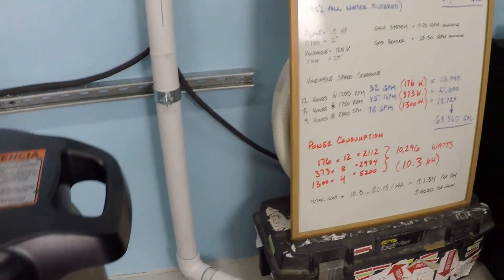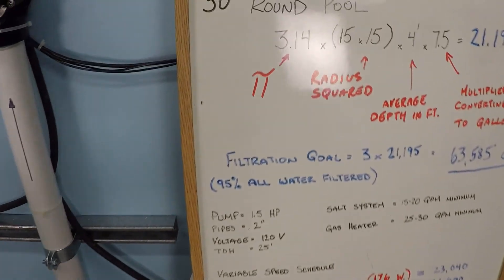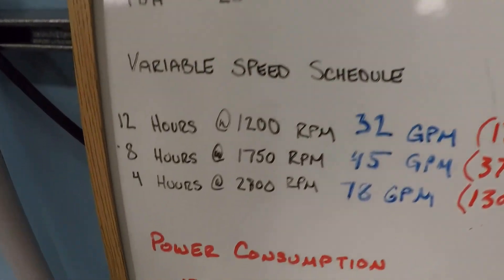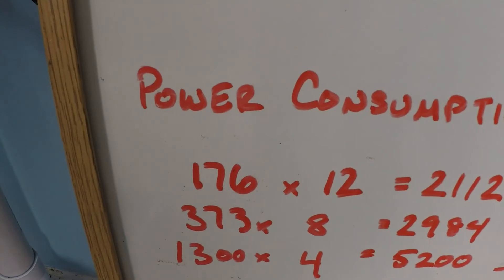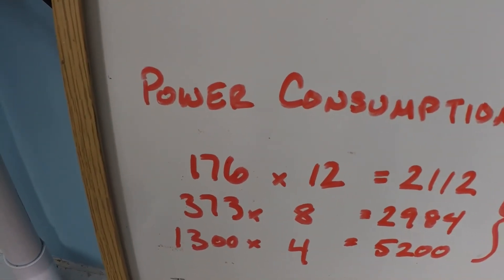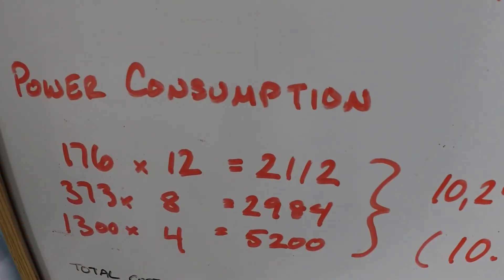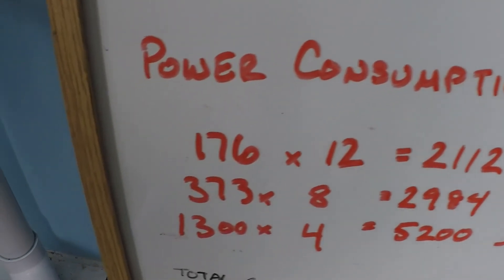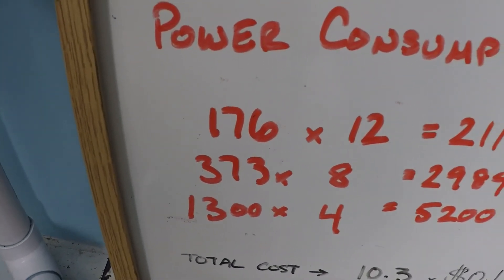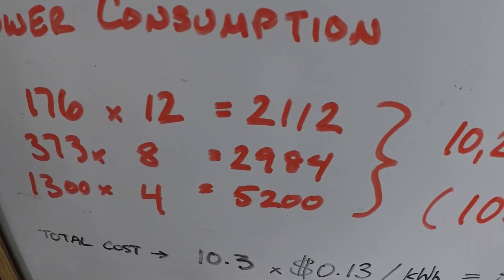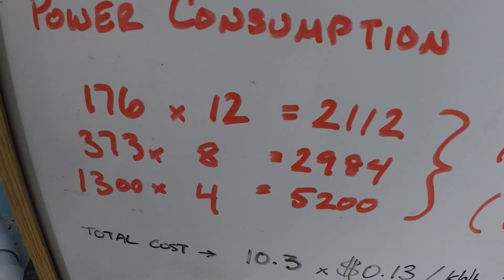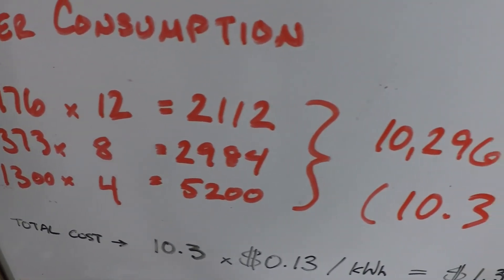Let's talk about the power consumption and the cost here. So take a look. First at 176 watts times 12 hours, that's just over 2000 watts. 373 times 8 hours is 2984. And then 1300 watts times 4 hours is 5200.